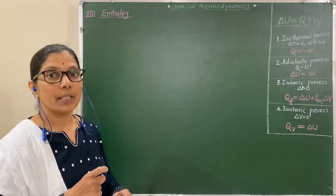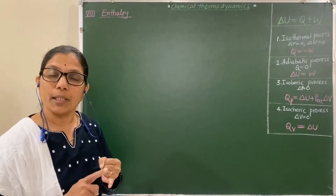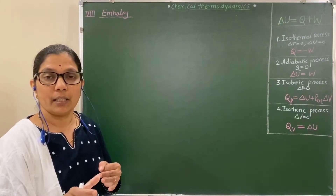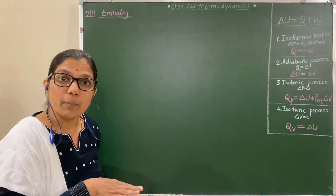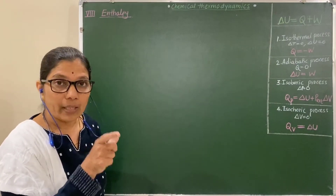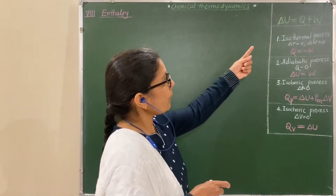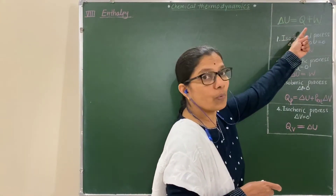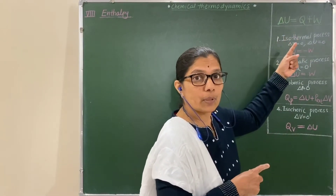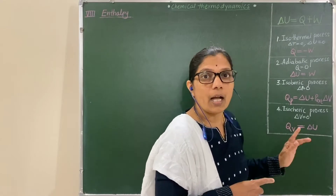In the previous session, you studied some points from the topic chemical thermodynamics — introduction, terms frequently used in thermodynamics, nature of work and heat, PV type of work, maximum work, work done in chemical reactions, internal energy, and the first law of thermodynamics. The formulation is ΔU = Q + W, and you derived it for isothermal, adiabatic, isobaric, and isochoric processes.